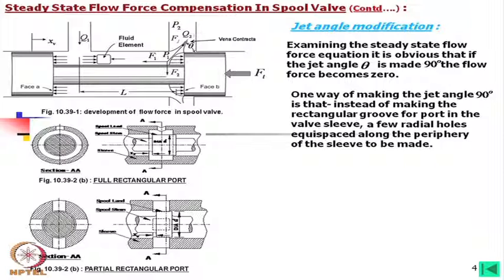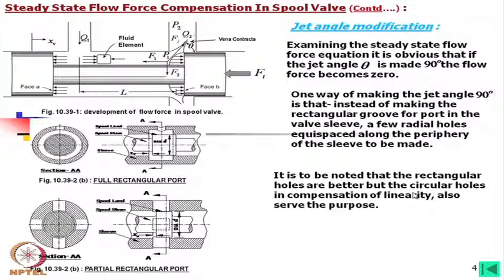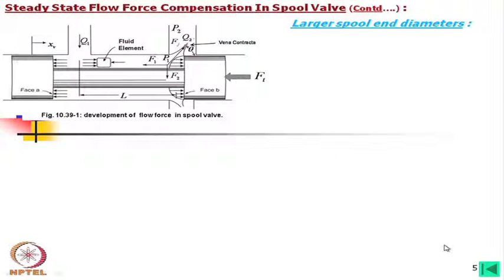It is seen that if we make such square holes, the flow jet angle may be very close to 90 degrees. Since cos(90°) = 0, there will be no component in the axial direction. It is noted that rectangular holes give better compensation, but circular holes also serve the purpose — they compensate the force, though with more nonlinearity.